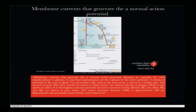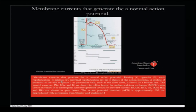This is the membrane current that generates a normal action potential, taken from the American Heart Association. From the resting potential at minus eighty there are different components: potassium, sodium, and calcium components and several others, with different pacemaker contributions regulating the whole process. There is a resting phase, an upstroke, early repolarization, a plateau phase, and a final repolarization phase. Kindly go through this very carefully, as it will enrich your understanding of how the heart functions.